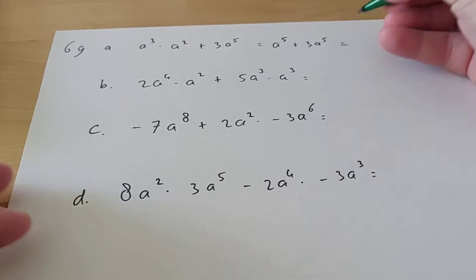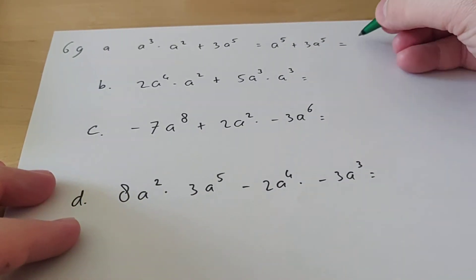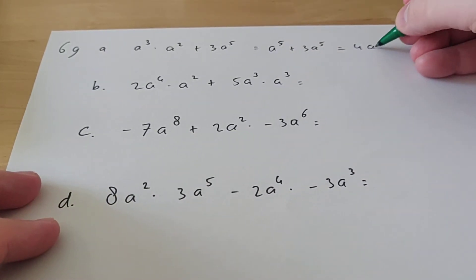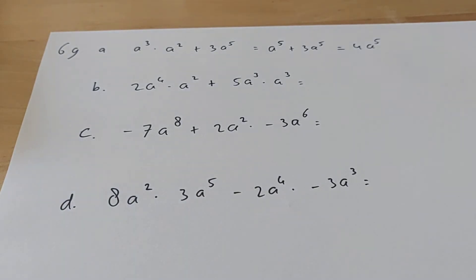Plus 3a^5. Well, if the powers are equal, you can add them, and then you get 4a^5. So that's how exercise 69a works.